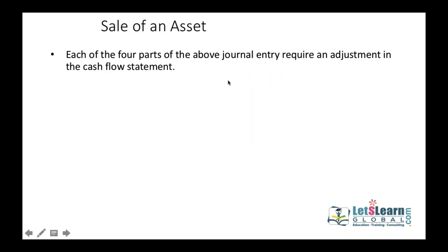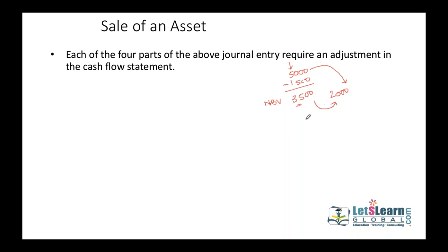When we sell an asset — for example, a 5,000 asset with accumulated depreciation of 1,500 giving a net book value of 3,500, sold for 2,000 — there is a loss of 1,500. This loss of 1,500 goes to the operating section as a non-cash adjustment to be added back. The 2,000 cash received from the sale is a cash inflow that should go to investing activities. Always remember: depreciation and losses are added to operating activities, and actual cash received from asset sales goes to investing activities.